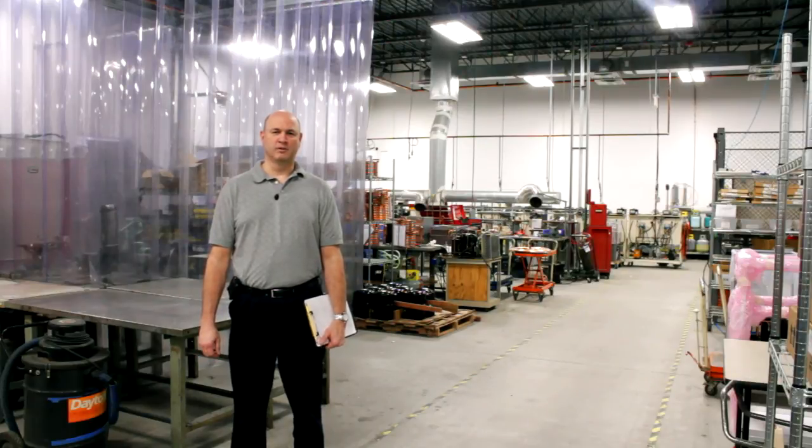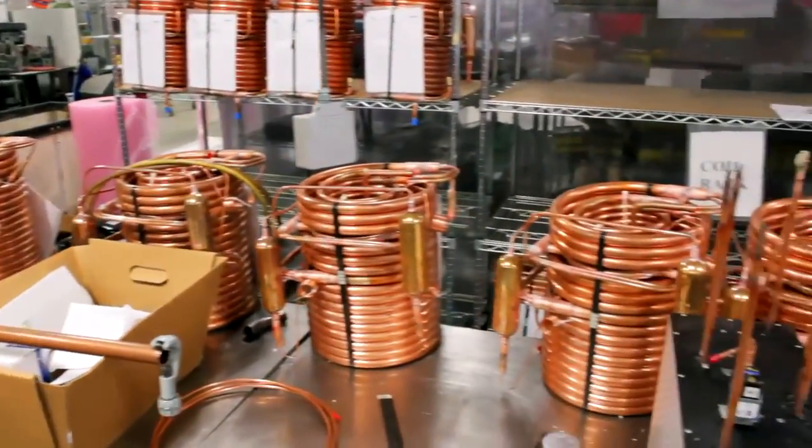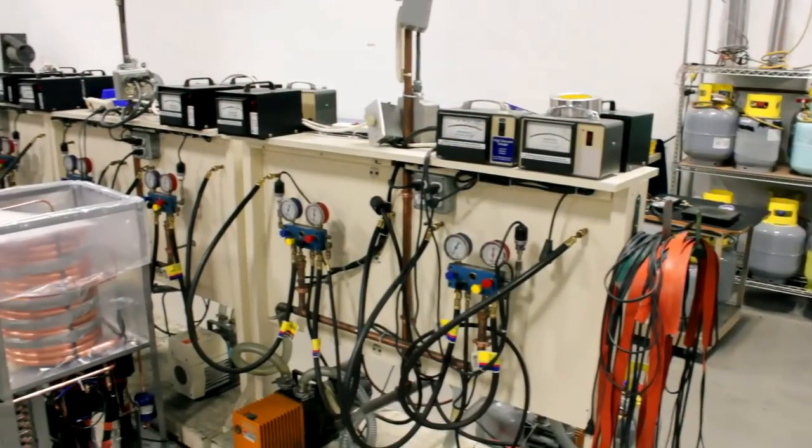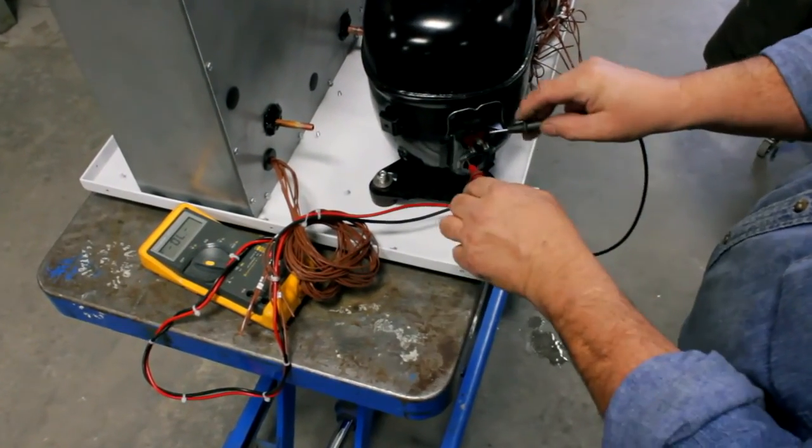Next, we're going to head on over to our refrigeration assembly area. Here's where all our refrigeration products are built and tested. Our manufacturing process includes brazing, flushing, charging, inspecting, and qualification testing of all products.